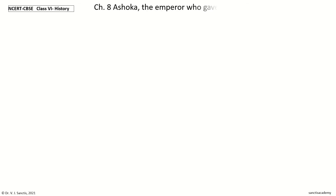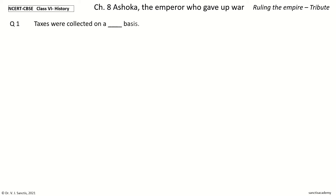Welcome to NCRD CBSC Class 6 History Chapter 8: Ashoka the Emperor who gave up war. In this video we will learn every point in the section 'Ruling the Empire.' This comprises five questions. Question one: taxes were collected on a blank basis. The options are irregular, regular, ad hoc, continuous. Your time to choose.